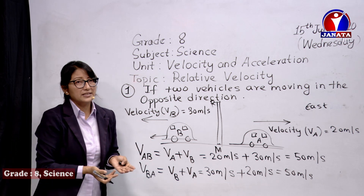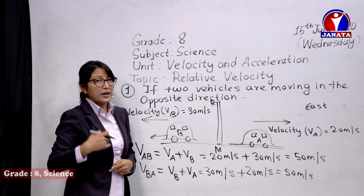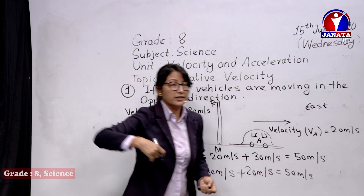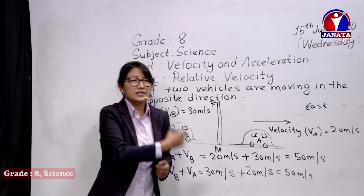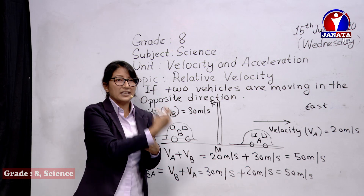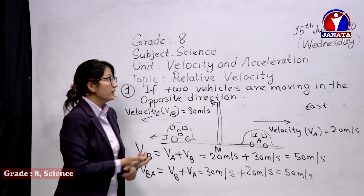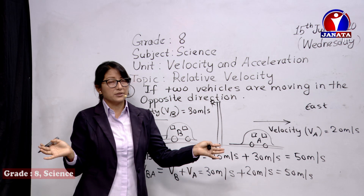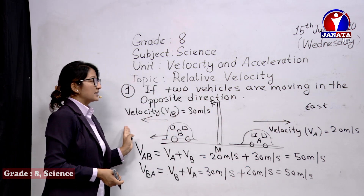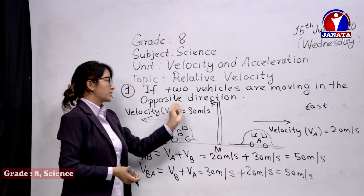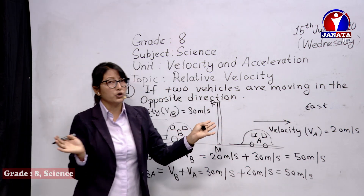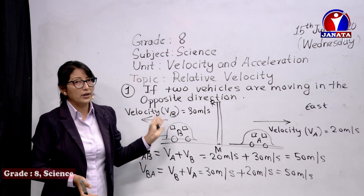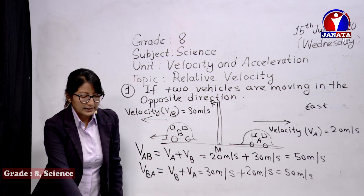If you and your friend are walking in the same direction, counting equal steps, covering the same distance — moving with the same velocity — your relative velocity is zero. But if you move away from each other with the same velocity, say 20 m/s each, the relative velocity is 40 meter per second. If both move at 30 m/s in opposite directions, the relative velocity is 30 plus 30 equals 60 meter per second.